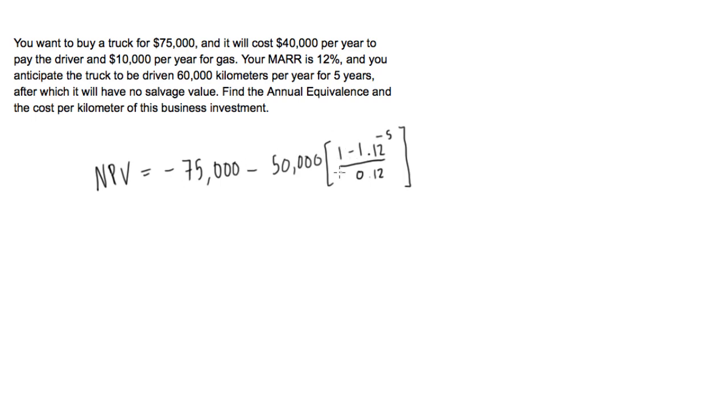If you punch this in your calculator and subtract it from negative $75,000, we find the net present value of this project is negative $255,238.81. This is the net present value. This takes into consideration the capital cost and the operating costs.